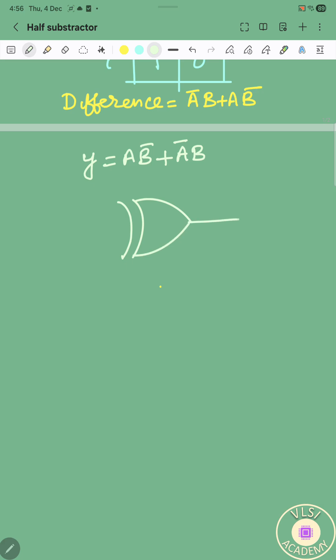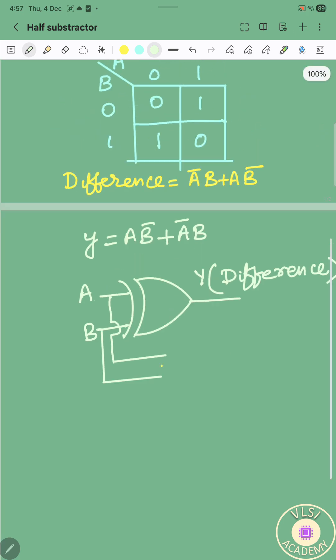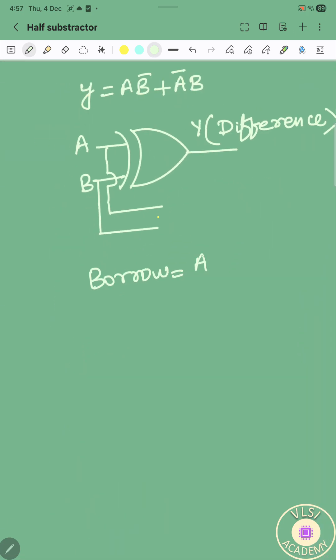If we draw a schematic for difference output in terms of logic gates, it will be A XOR B. And from same set of inputs, we can also represent borrow output in terms of logic gates as A bar B, where A will be first driven by the inverter and then it will be driven by an AND gate.